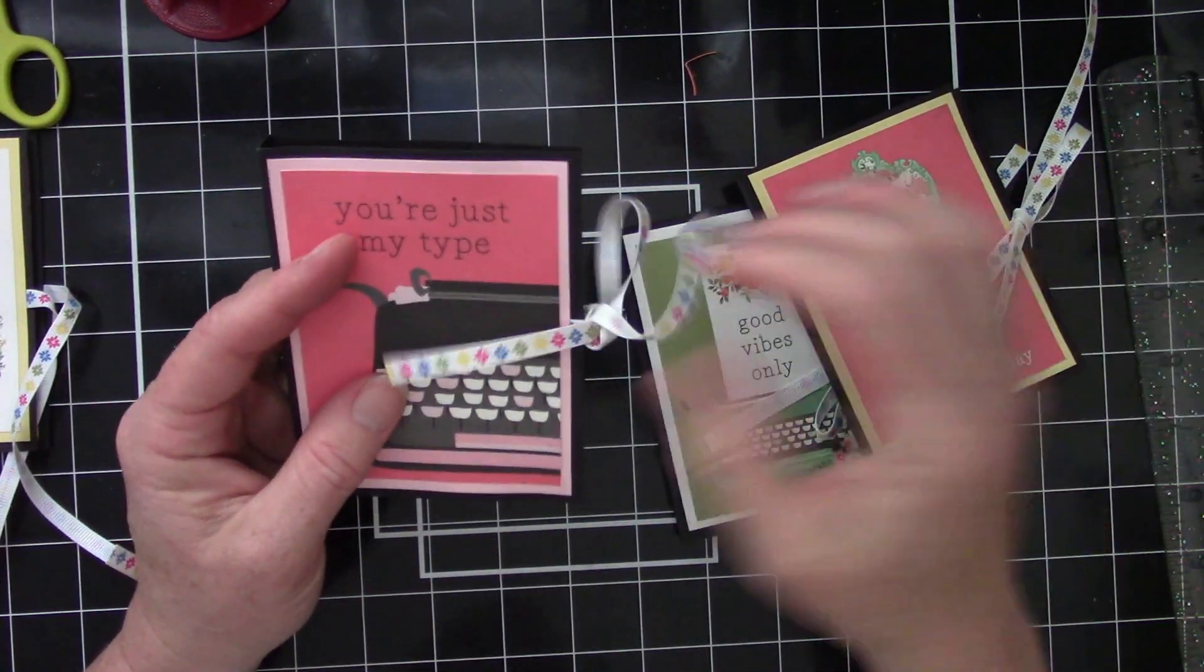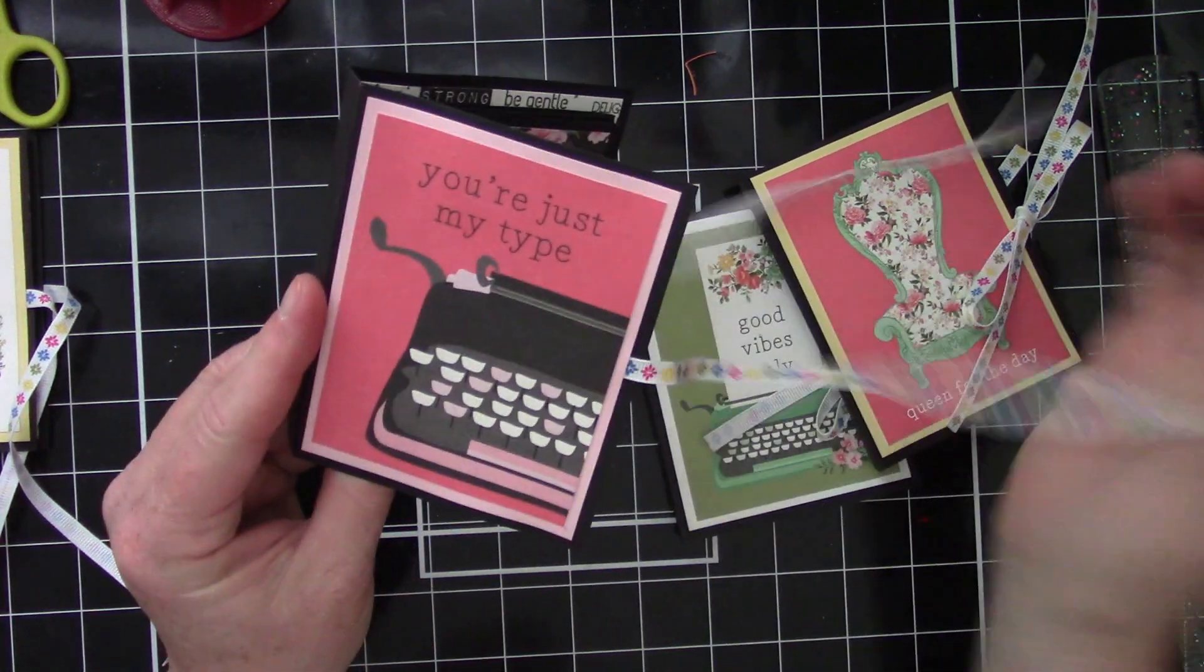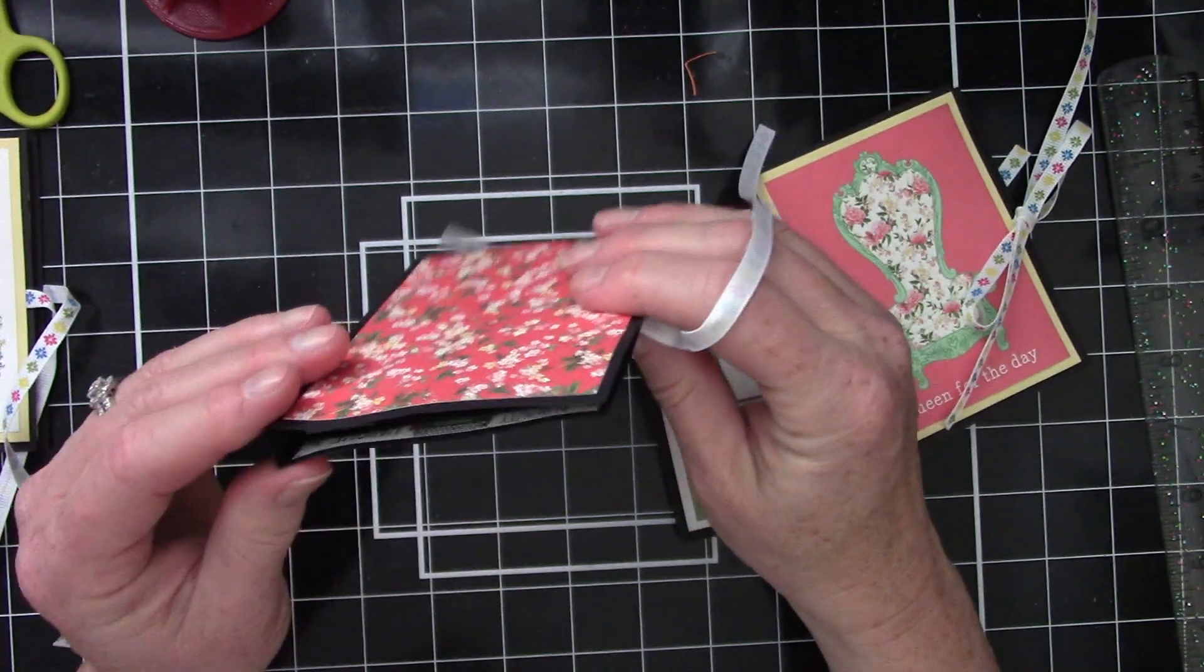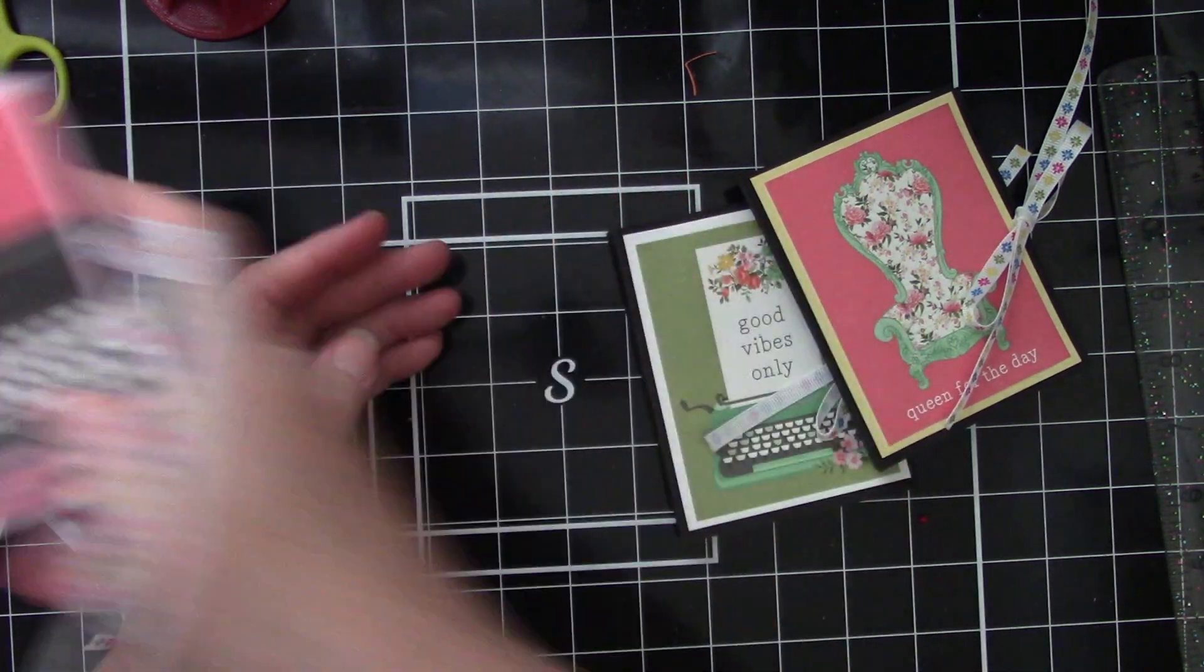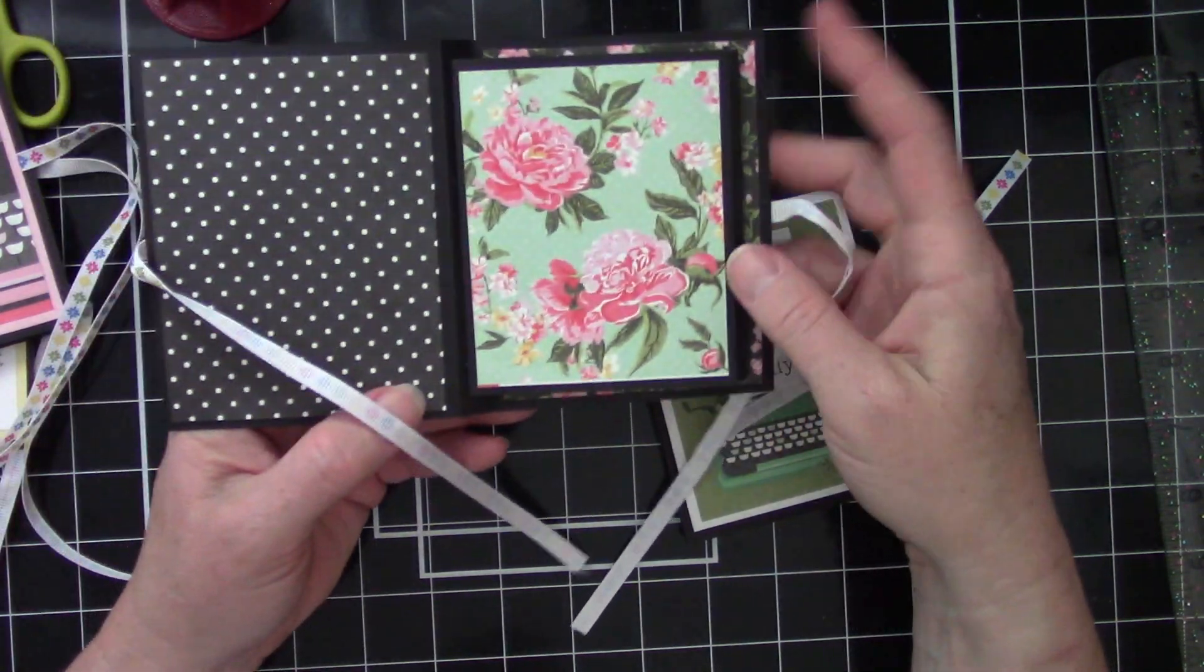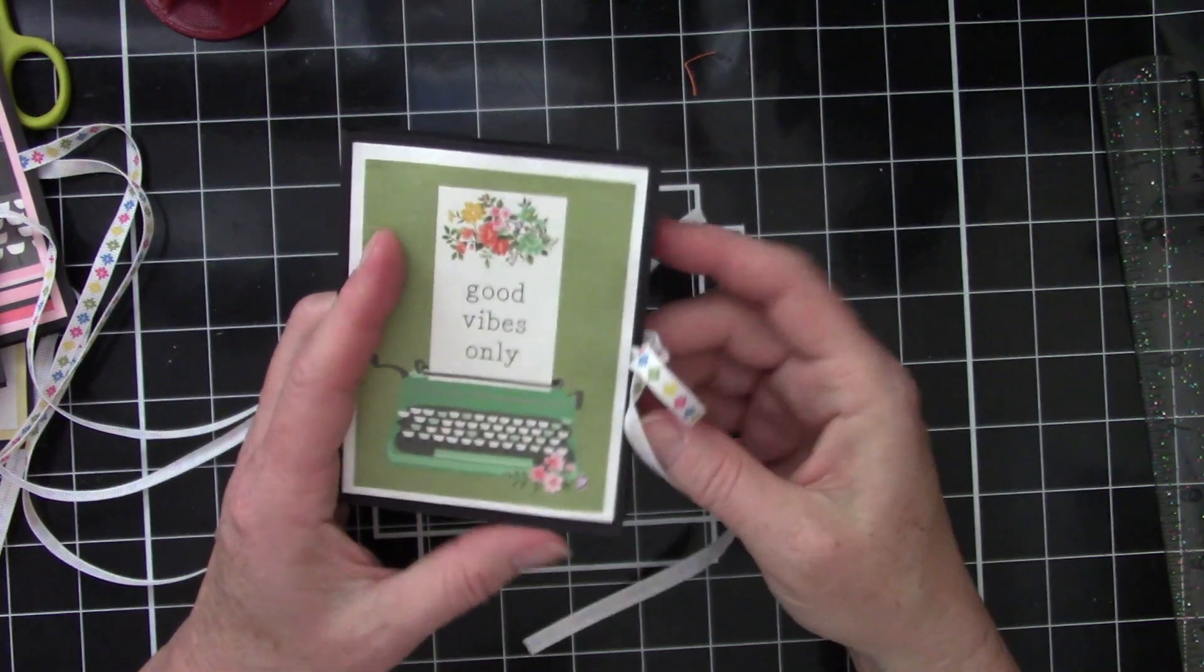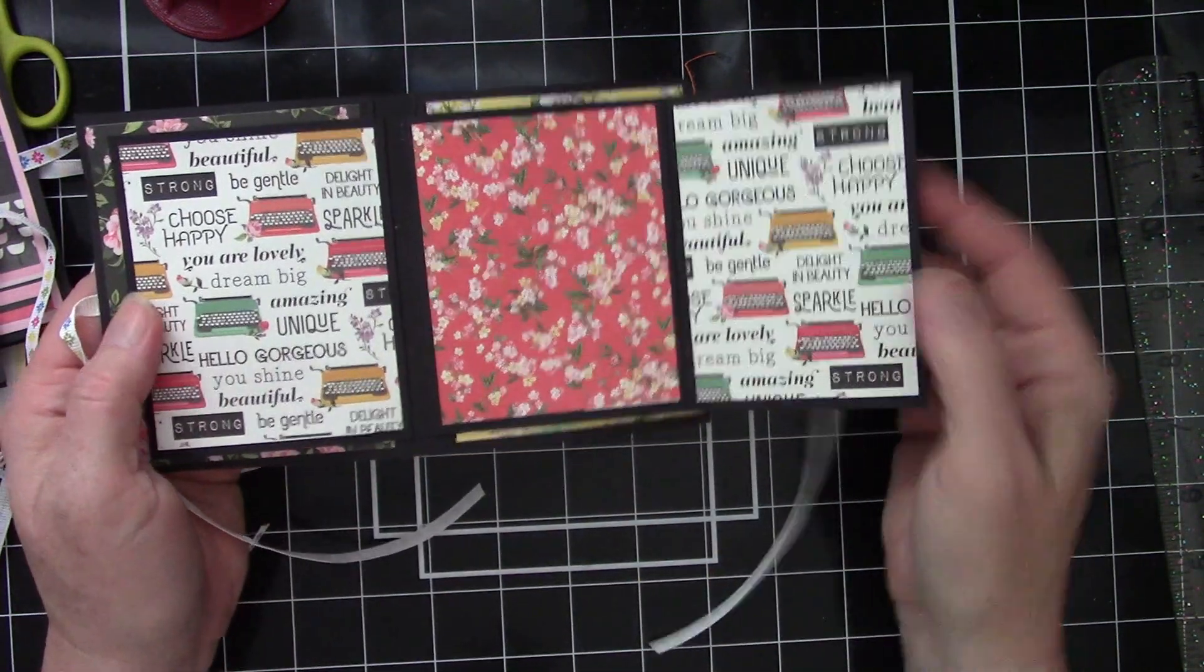So they're really cute. I made four of them because that's kind of what I had left. This one says 'you're just my type,' so really cute little typewriters, lots of floral. Really simple and I did use 110 pound cardstock to make these and I will show you how to make them at the end. Queen for the day - I did black cardstock because it seems like that kind of just went with everything. And 'good vibes only' - I just love the typewriters and the florals.